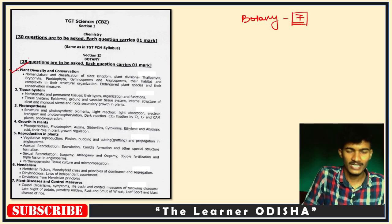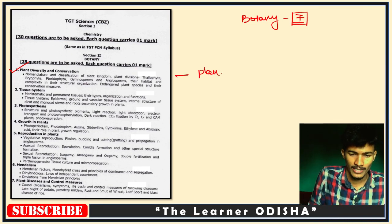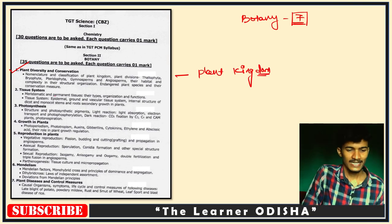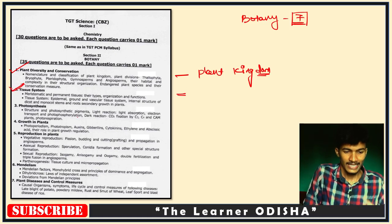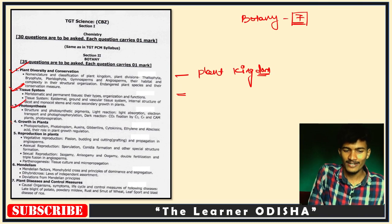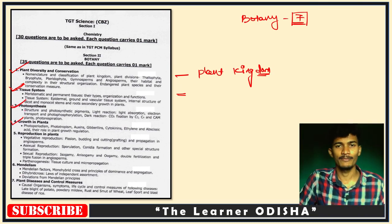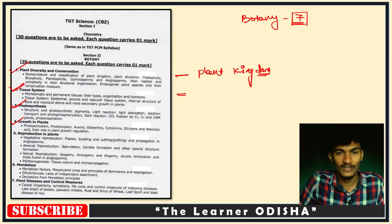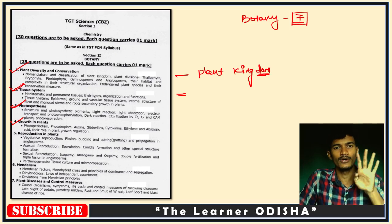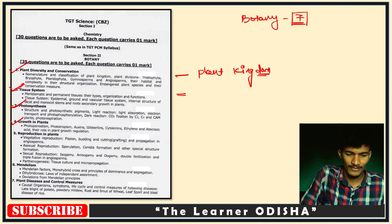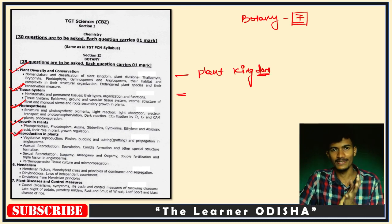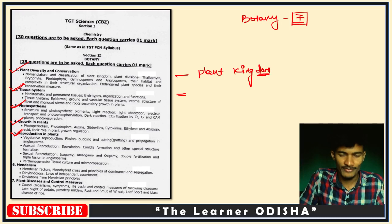For botany, the first chapter is plant diversity, conservation, and plant kingdom. The second chapter is tissue system and plant anatomy. Then photosynthesis, plant growth and growth regulators, phytohormones — these are easy topics. Next is reproduction in plants, both sexual and asexual reproduction.